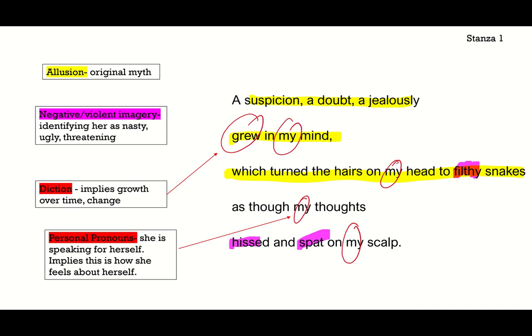And then there are these personal pronouns: 'in my mind,' 'on my head,' 'my thoughts,' 'my scalp.' She's really speaking for herself — the character is finally telling her own story, which is that element of feminist revisionism we've been talking about. But she's also using these negative, violent, animalistic words, implying that she feels that way about herself. This is how she feels about herself at the start of the text — she's feeling the way she looks, in a sense.